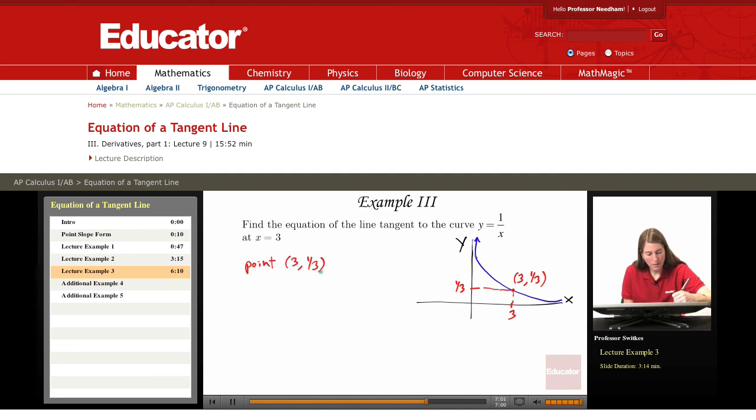And we need to find a slope and then we can use point slope form. So the slope here is going to be f prime of 3.